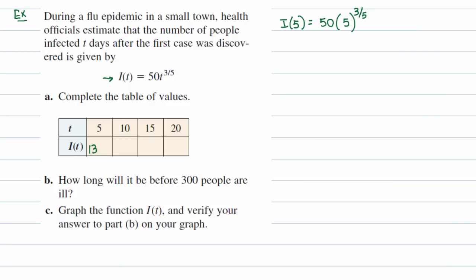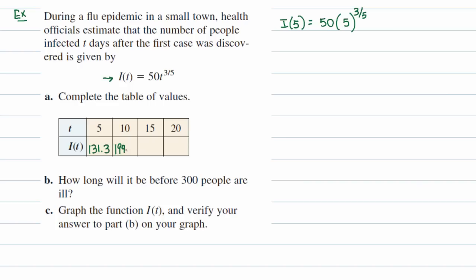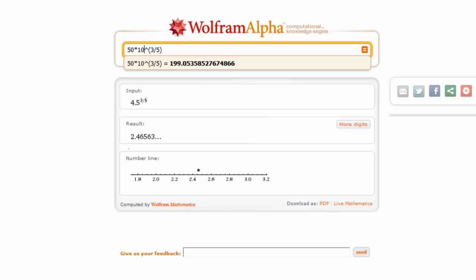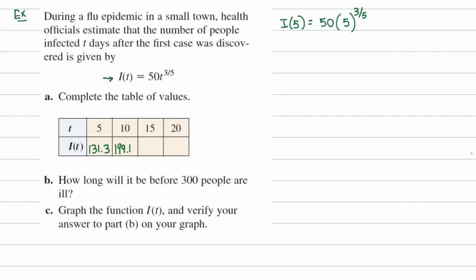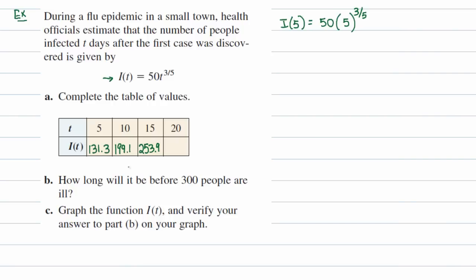Continuing the table: at T=10, I get approximately 199.1; at T=15, approximately 253.9; at T=20, approximately 301.7. Something to note: this is a number of people, and you can't have a fraction of a person, so these should really be rounded down to 131, 199, 253, and 301.